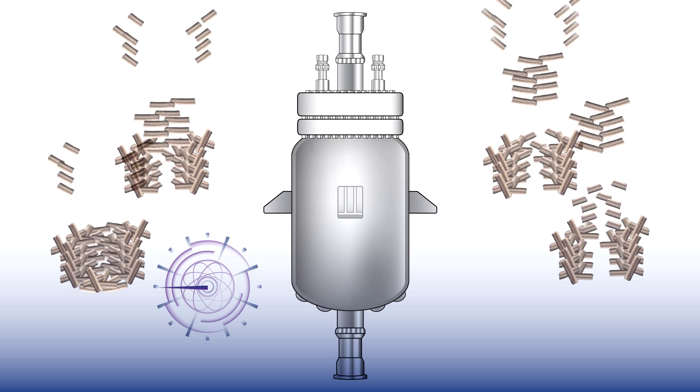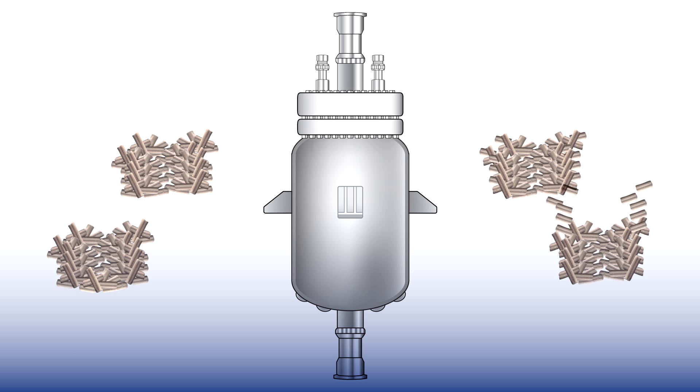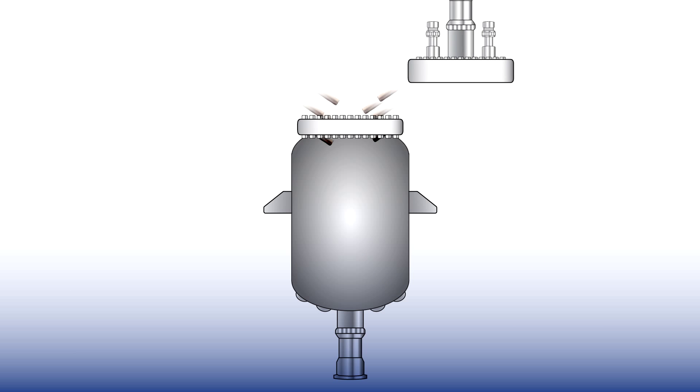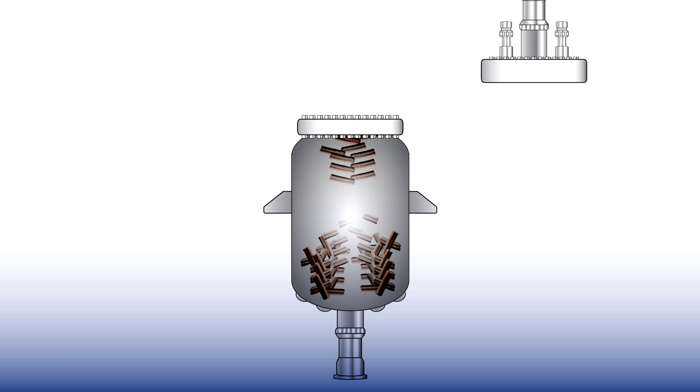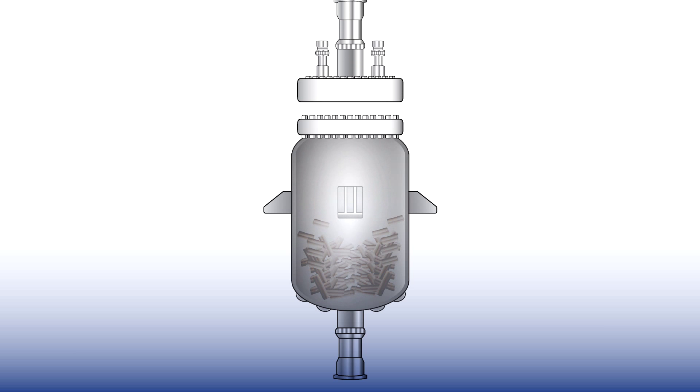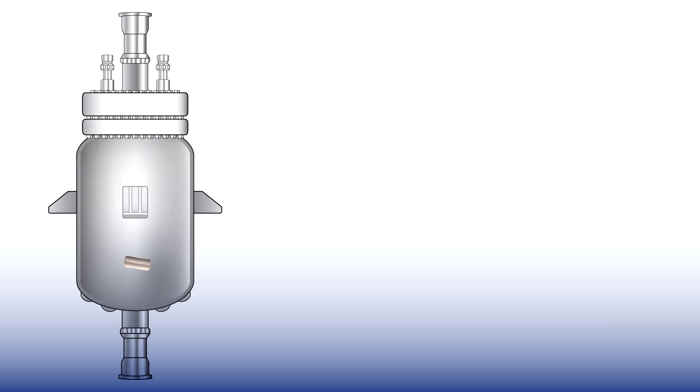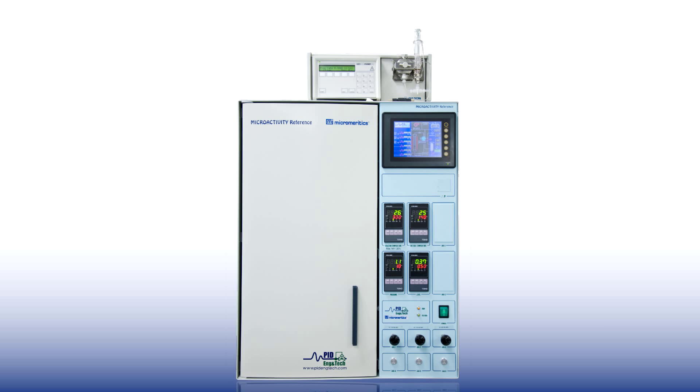Producing that much sample can be timely and costly. In addition, you must adhere to the time schedule of the company that is driving the project. Now imagine the efficiency and convenience of testing the catalytic capacity of your catalyst using only 0.25 grams of sample on your own schedule. The PID microactivity reference reactor can make this possible.